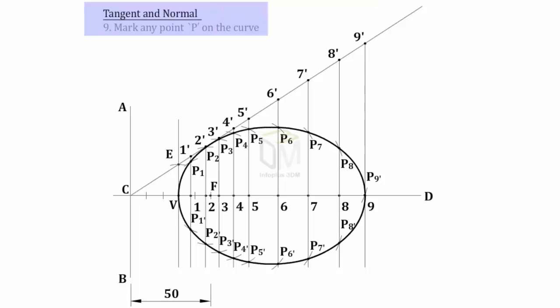Tangent and normal. Mark any point P on the curve. Join PF and draw FQ perpendicular to PF. Join QP and extend to get the tangent. Draw the normal MN perpendicular to the tangent.